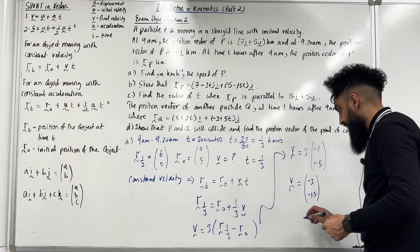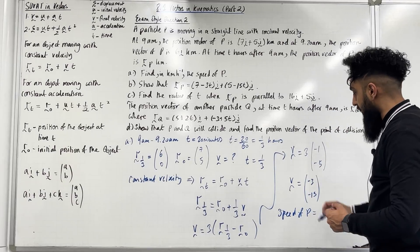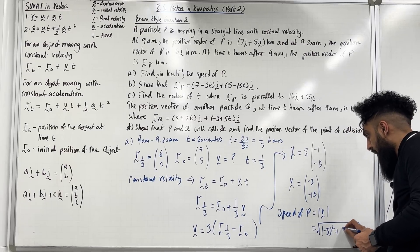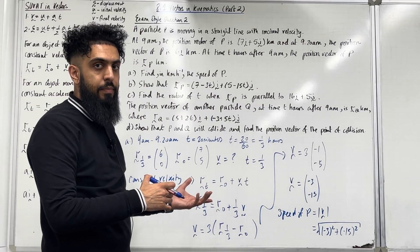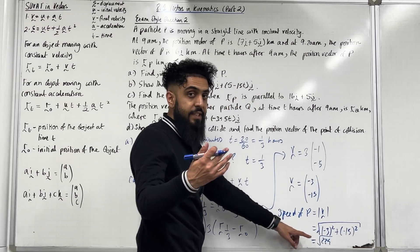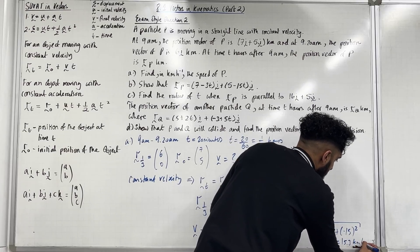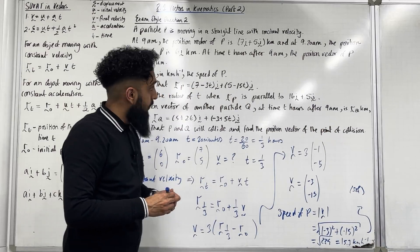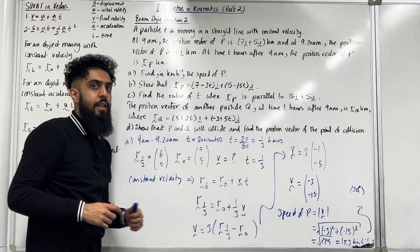Multiplying the i and j components by 3: V = (−3, −15). The speed of P is the magnitude of the velocity vector: √[(−3)² + (−15)²] = √[9 + 225] = √234. Rounded to 3 significant figures, this gives 15.3 km/h. So the speed of P is 15.3 km/h to 3 significant figures.